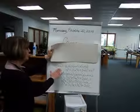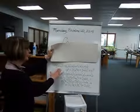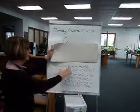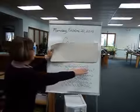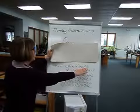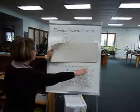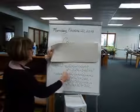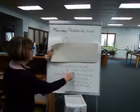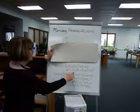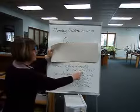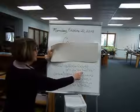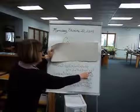Here's the binomial expanded: a plus b, cubed, equals a cubed plus 3 a squared b plus 3 a b squared plus b cubed.